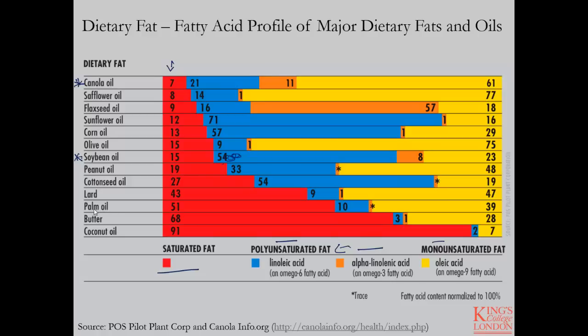Looking at animal fats such as lard or butter, you can see the saturated fatty acid content is much higher — 68% in the case of butter and 43% in the case of lard — and the polyunsaturated fatty acid content is very low. This is an important point when assessing dietary fat intake: the amount of fat consumed does not necessarily give you any indication of the fatty acid profile of the fat consumed by an individual, and without knowing this, you cannot really make a determination on the healthiness or unhealthiness of an individual's fat consumption.